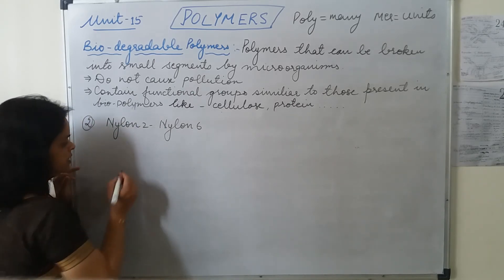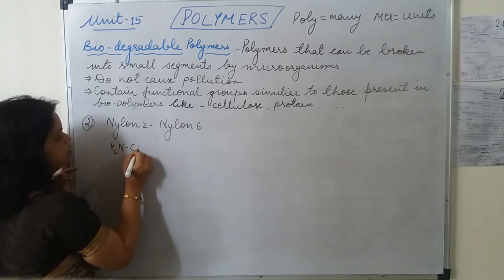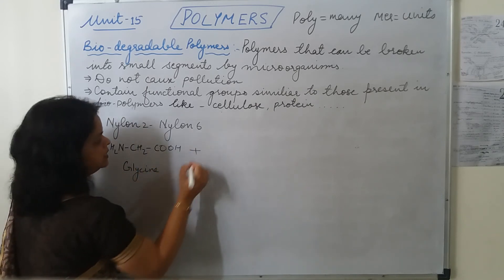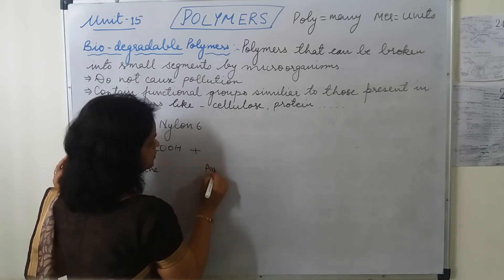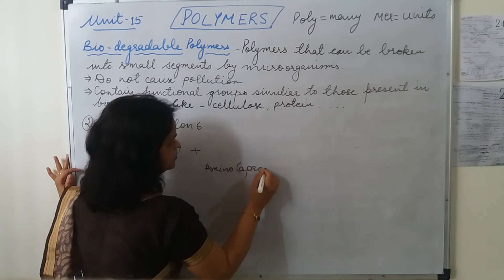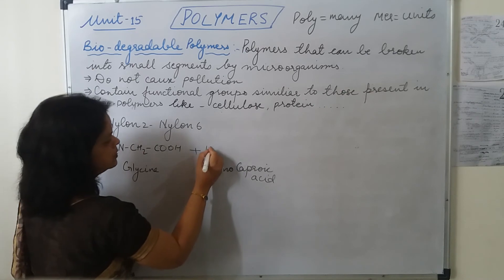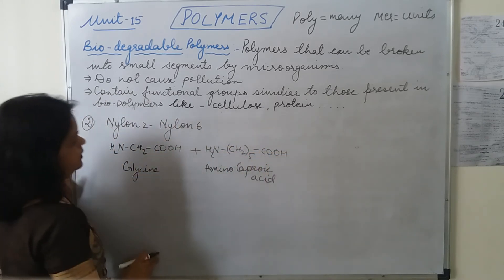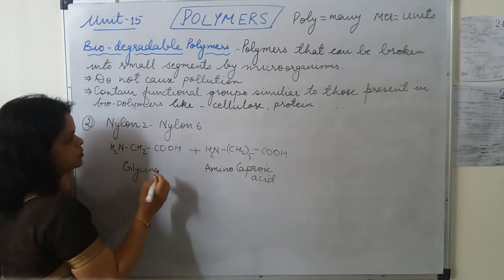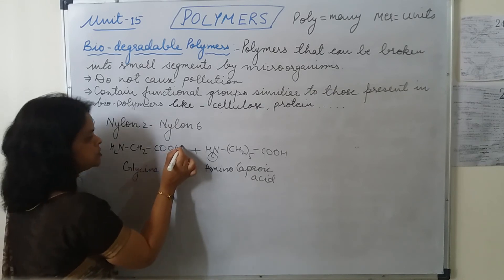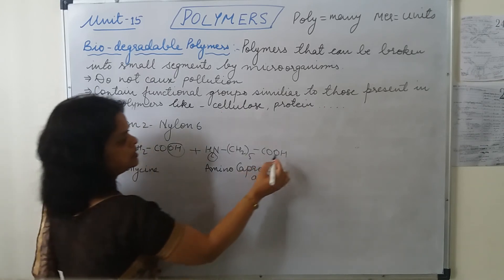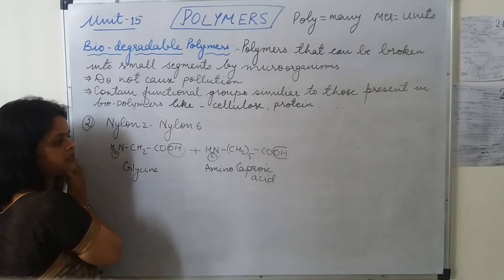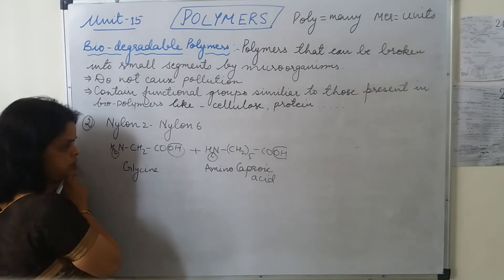Let's take the structure of glycine: NH2, CH2, COOH. The other monomer is aminocaproic acid: NH2, CH2 (×5), COOH. Nylon 2, Nylon 6 is a polyamide, so from the NH2 part the H leaves, and from the COOH the OH leaves in the form of water. The OH of one monomer combines with the H of the next glycine molecule, and the H combines with the next aminocaproic acid molecule.